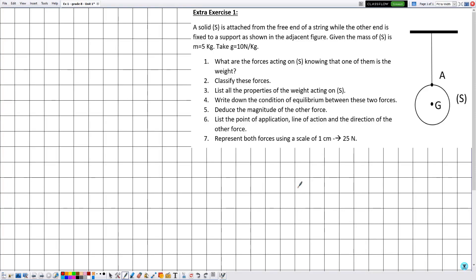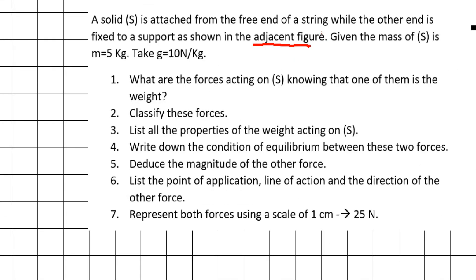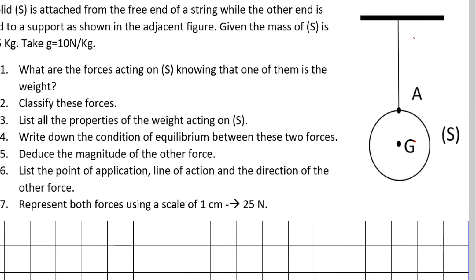Hello everyone. In this new video, we are going to solve extra exercise number one in the first unit, which is the unit of mechanics. A solid S is attached from the free end of a string while the other end is fixed to a support, as shown in the adjacent figure. The solid S is connected to the string via the point of contact A, and the string is connected to a fixed support.